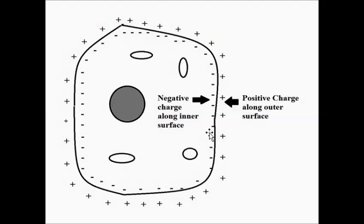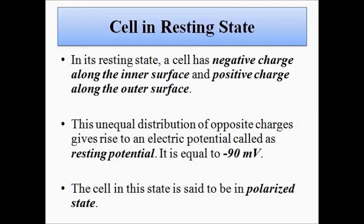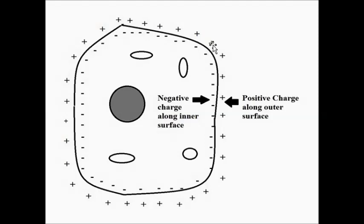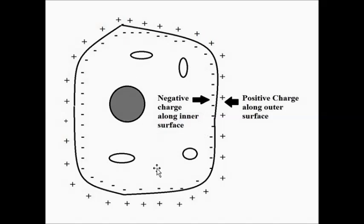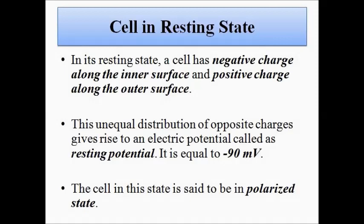This unequal distribution of positive and negatively charged ions leads to the development of an electric potential called the resting potential. The potential developed between these oppositely charged ions is called the resting potential, and its value is generally minus 90 millivolts — on the order of millivolts. In this condition, the cell is said to be in a polarized state. This unequal distribution of charge carriers along the cell membrane causes the development of the resting potential, which is about minus 90 millivolts.